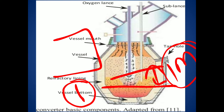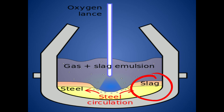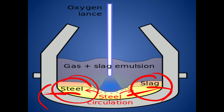In the LD converter, impurities are oxidized directly by blowing oxygen. Pig iron may contain sulfur, phosphorus, silicon, manganese, and carbon as impurities. These react with the oxygen at 10 bar pressure along with lime, and the impurities are separated as slag while the steel moves the other way.